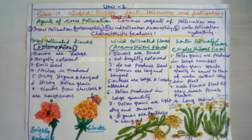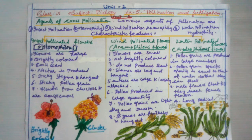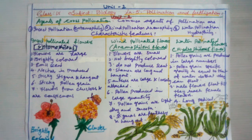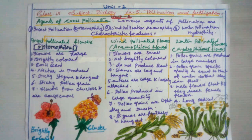Now we move to water-pollinated flowers. Water pollination is called hydrophily — 'hydro' means water. Water-pollinated flowers are called hydrophilous flowers, and this takes place mostly in hydrophytes and aquatic plants. Pollen grains are produced in large numbers. In some plants, the pollen grains have a specific gravity almost equal to that of water so they remain floating at or just below the surface. Their specific gravity is equal to or less than water so they can float rather than sink.